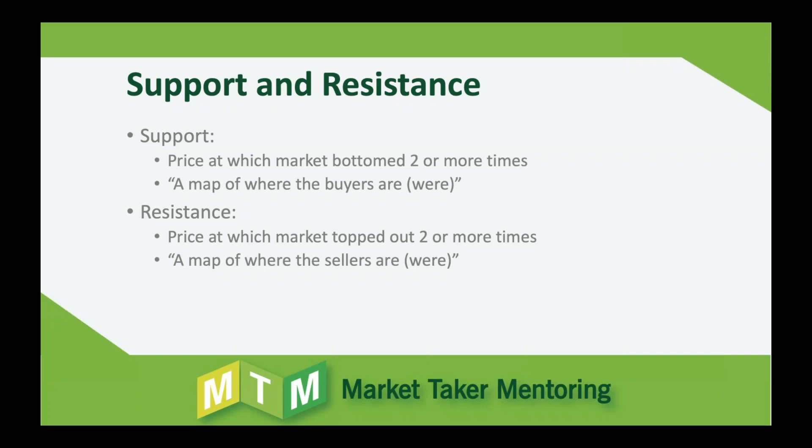Trading at its highest level is not random. It's very sophisticated traders who program computers to run sophisticated mathematical models that say: at this price, this is what the asset is worth. If it goes too far below that price, I'm going to buy it. If it goes too far above, that's where I'll sell it. Resistance is just the mirror image of support - a price at which the market topped out two or more times. It's a map of where the sellers were in the past.